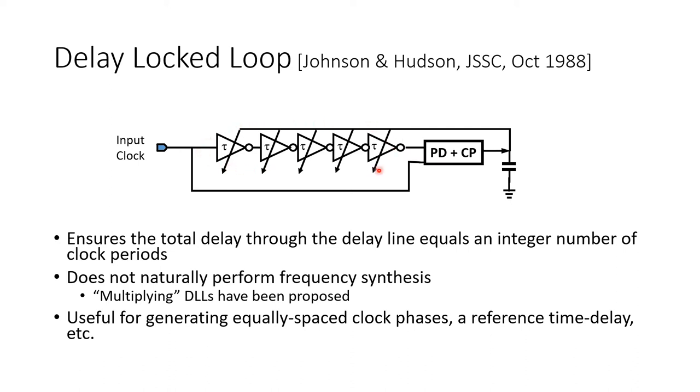So this can be quite useful. You've got a bunch of copies of the clock all uniformly spaced across an integer number of clock periods. So this gives you, for example, quadrature phases or even more than quadrature phases.